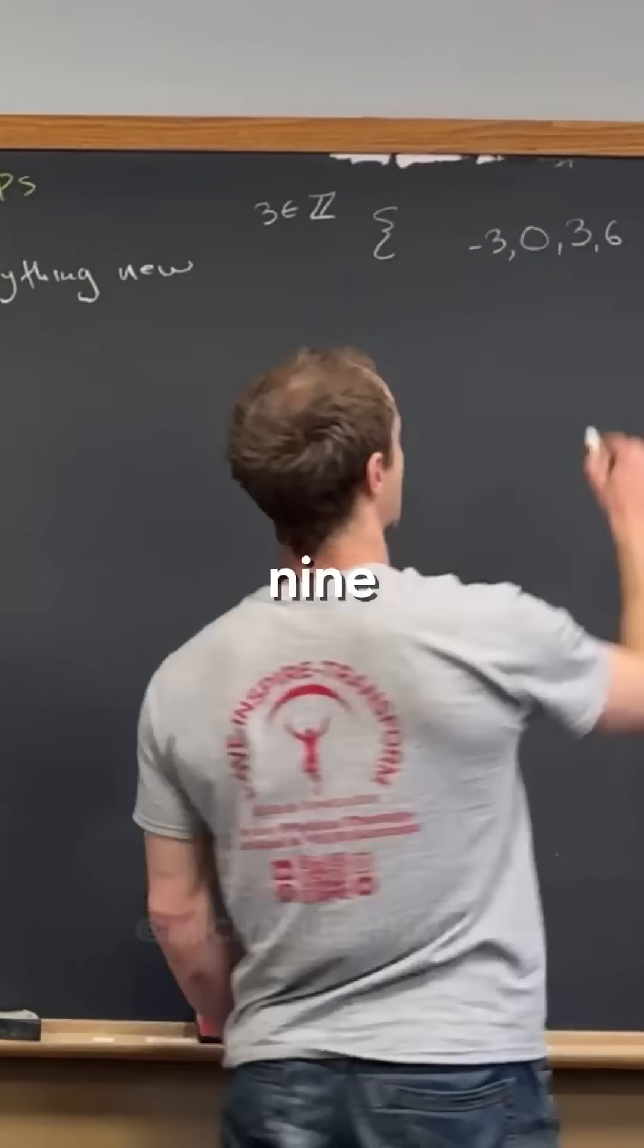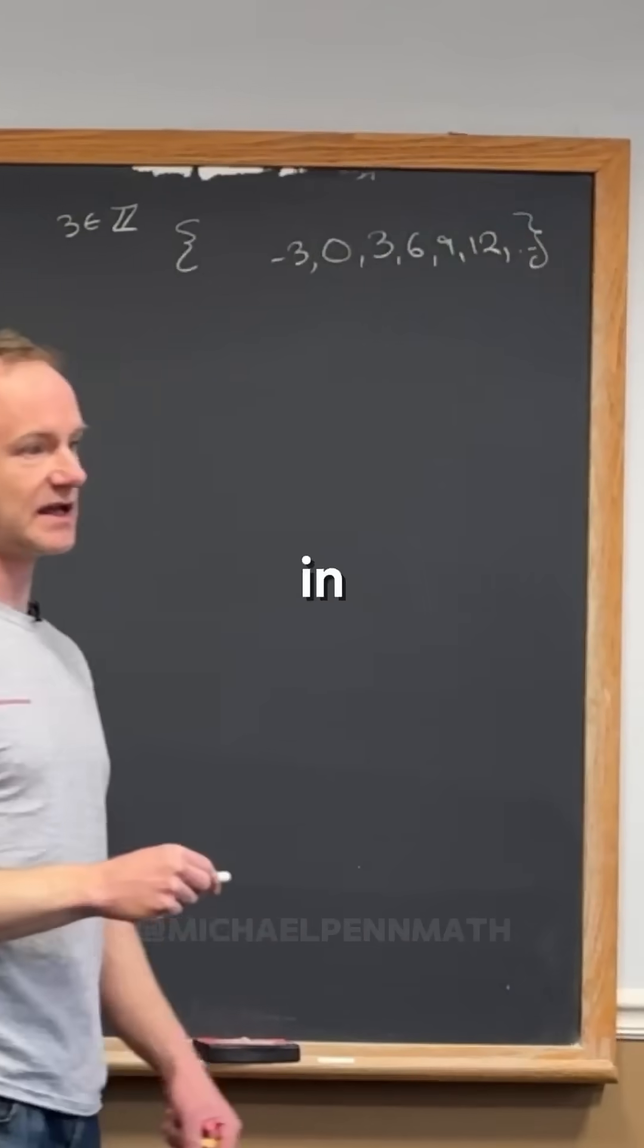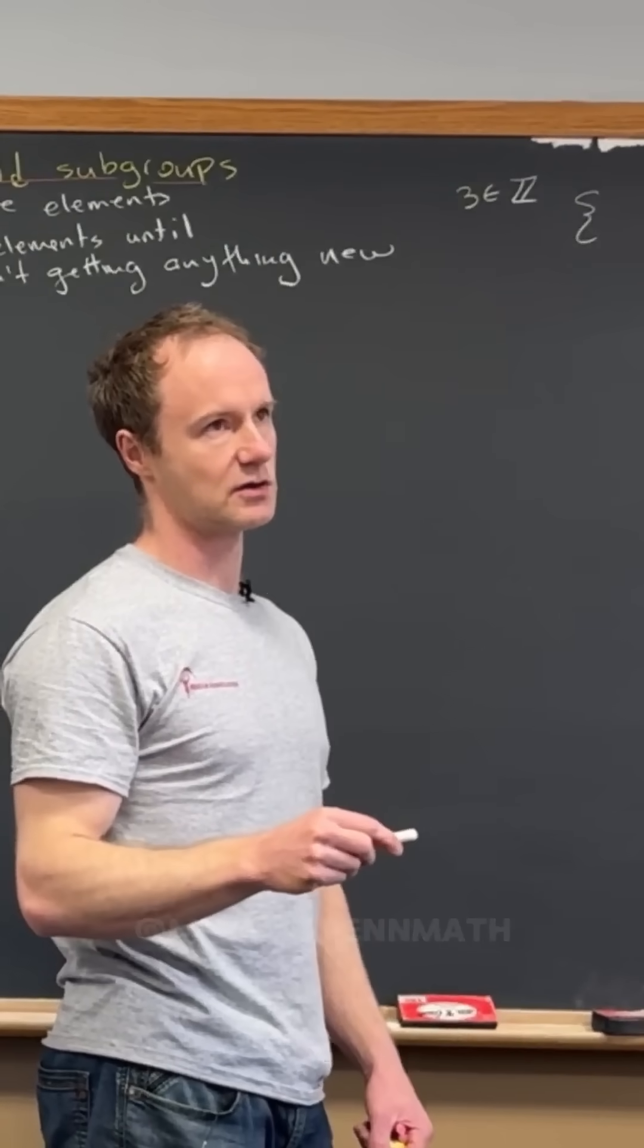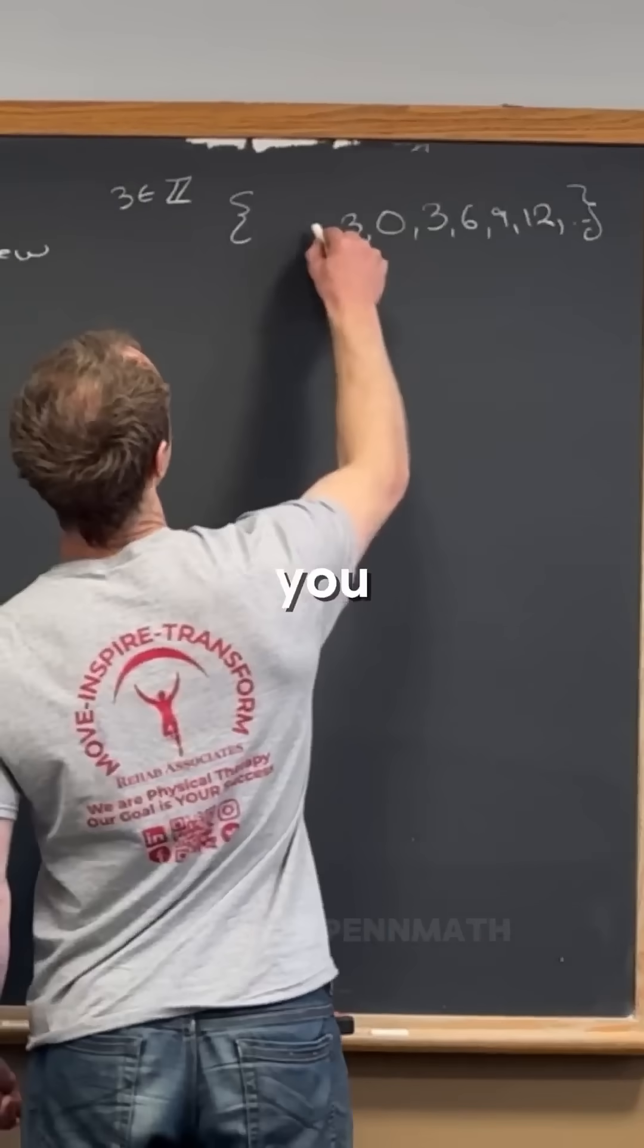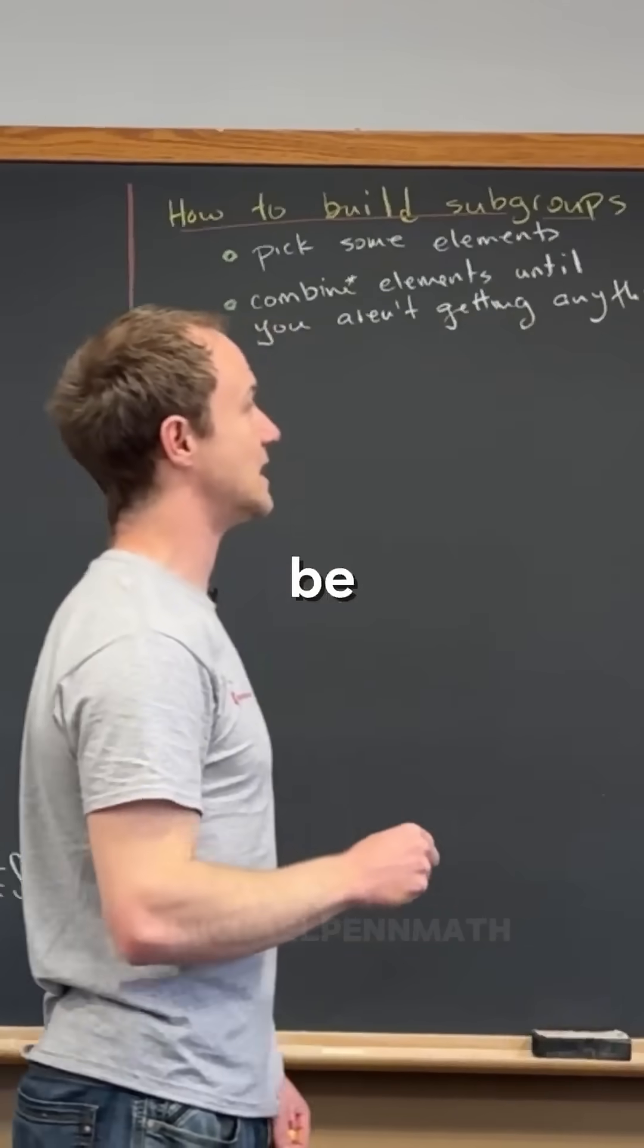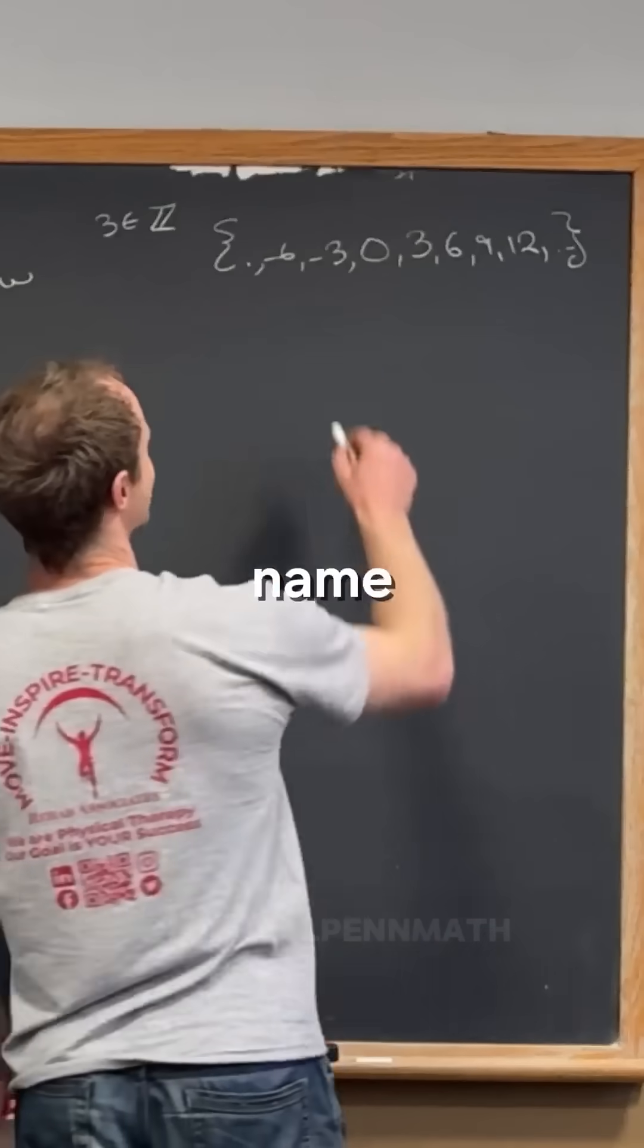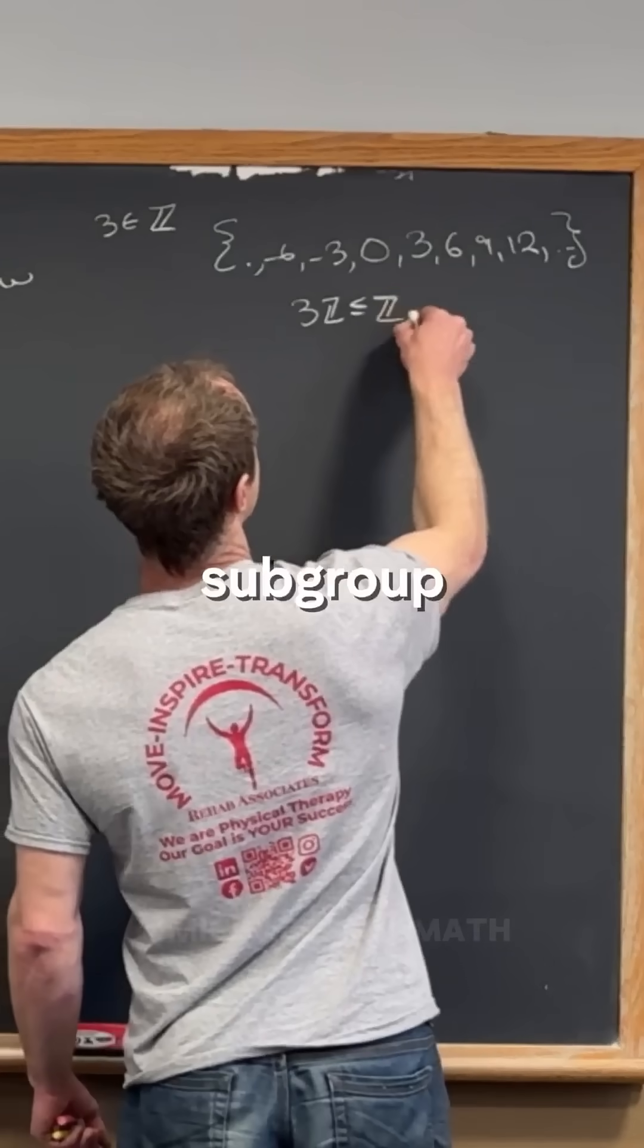And then what's three plus six? Nine. Can you see what's going on here? In this case, it's going to be an infinite subgroup because you'll always get new things, but there's kind of a pattern here. You could go backwards in this direction as well. So that would be an obvious subgroup of Z. And we've got a name for this: this is three Z, which is a subgroup of Z.